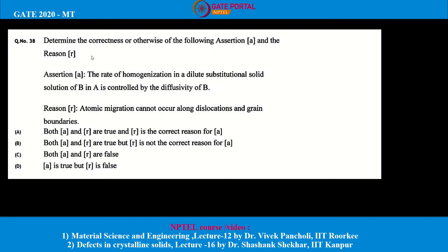Getting on to the question: Determine the correctness or otherwise of the following assertion A and the reason R. The assertion A is: the rate of homogenization in a dilute substitutional solid solution of B in A is controlled by the diffusivity of B. Reason R is: atomic migration cannot occur along dislocations and grain boundaries. The options are: A) both A and R are true and R is the correct reason for A; B) both A and R are true but R is not the correct reason for A; C) both A and R are false; D) A is true but R is false.